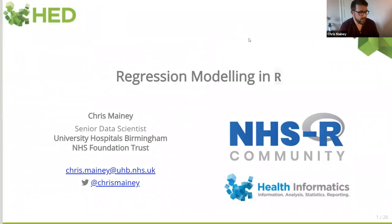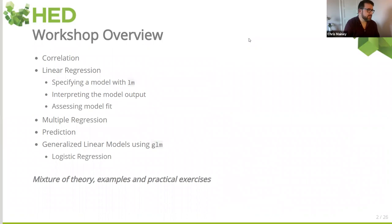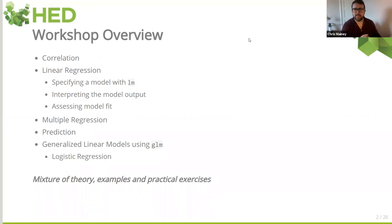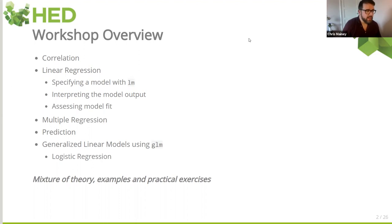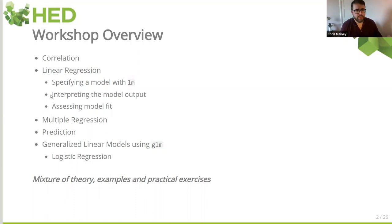Okay, so regression modelling. What I'm going to go through today is firstly correlation. The first thing you'll generally be asked to do, if you're doing something that would probably be good as a regression model, is someone will ask you if some things are related. Correlation is often a standard first step in terms of understanding whether two variables are related. We'll look at the slightly more powerful approach with a linear model, a linear regression, and specifically we'll use the LM function in R, which is the standard for linear models.